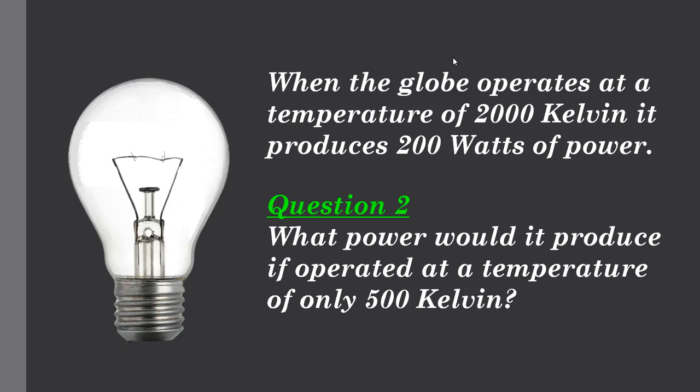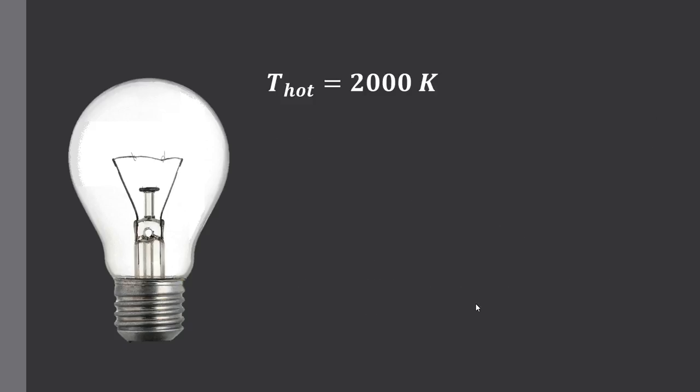Let's look at a second example. Again we're comparing our initial conditions of a temperature of 2000 Kelvin and power rating of 200 watts. By the way, a watt is just one joule per second. Now our question is what power would it produce if operated at a temperature of only 500 Kelvin, much lower. Now our 2000 Kelvin is the hot temperature in this comparison. And our 500 Kelvin is our cool temperature or our cold temperature in comparison. So our hot temperature is 2000 K. Our hot power is 200 watts. Our cold temperature is 500 K. And our cold power is question mark.